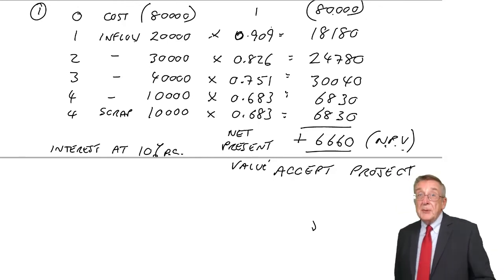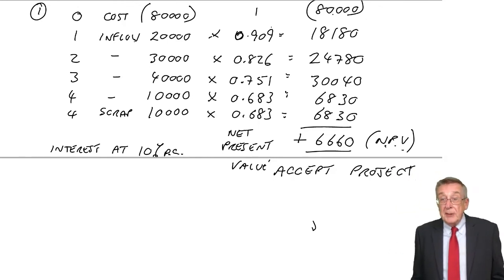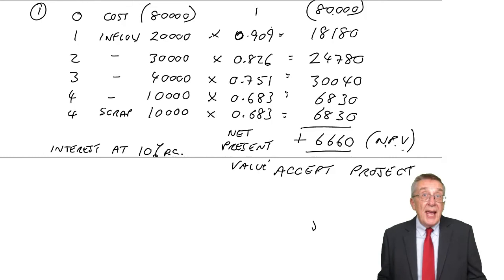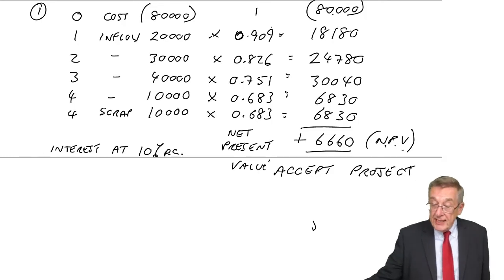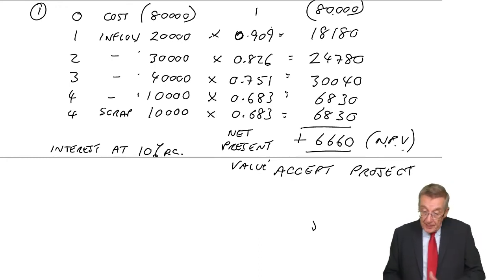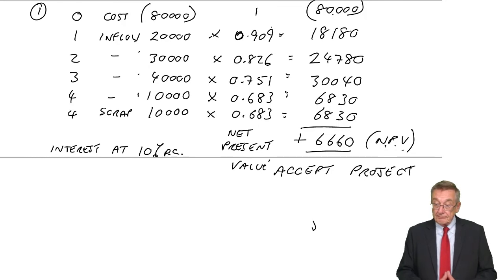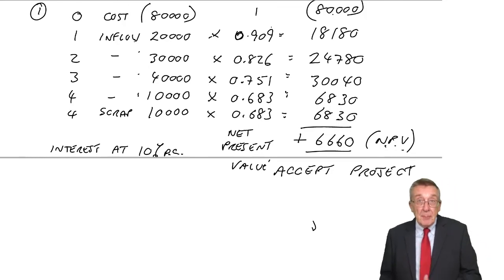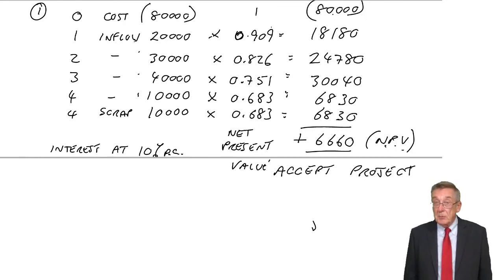Here, there were different flows each year, so I used the ordinary present value tables. Had it been the same amount each year, had it been 20,000 each year, you might use your annuity tables. We've been through all that already. But that's how we apply the discounting to investment appraisal.